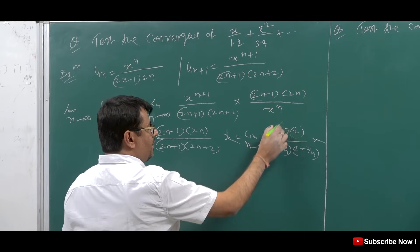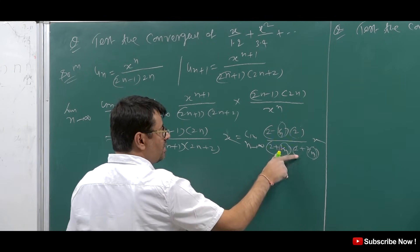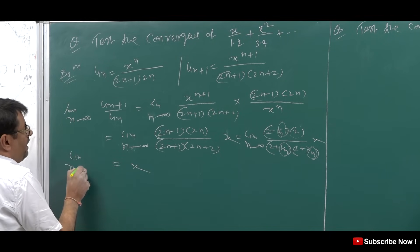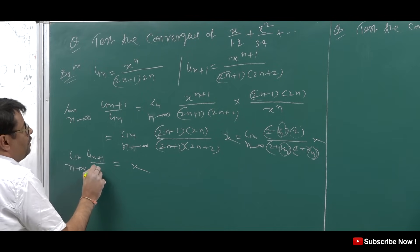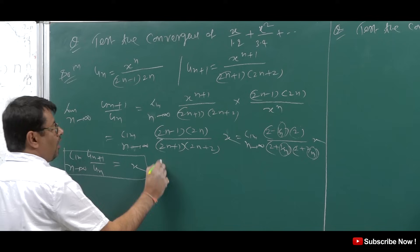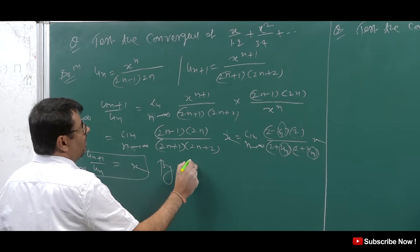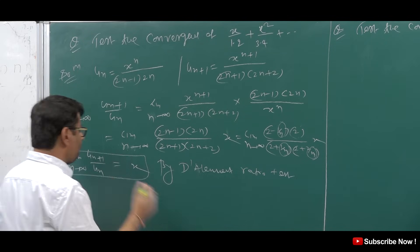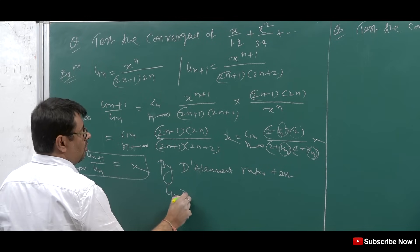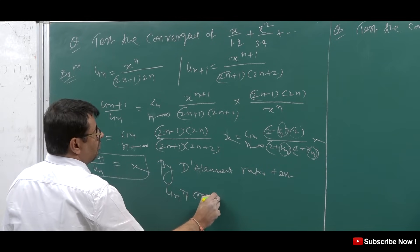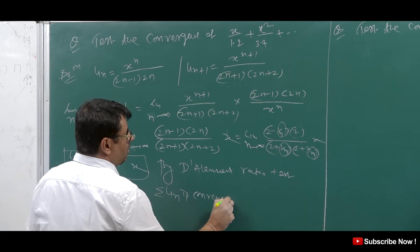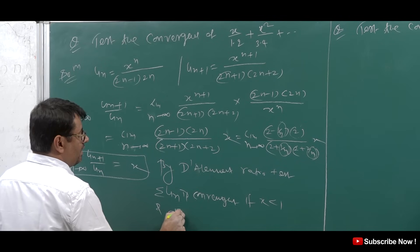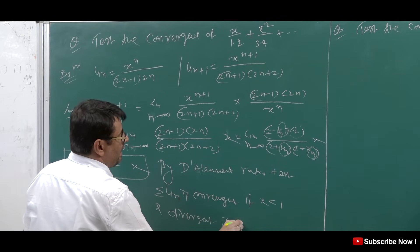Now as n tends to infinity, the ratio (2n−1)·2n upon (2n+1)·(2n+2) tends to 1. So the limit equals x. Therefore, summation u_n is convergent if x is less than 1, and divergent if x is greater than 1.